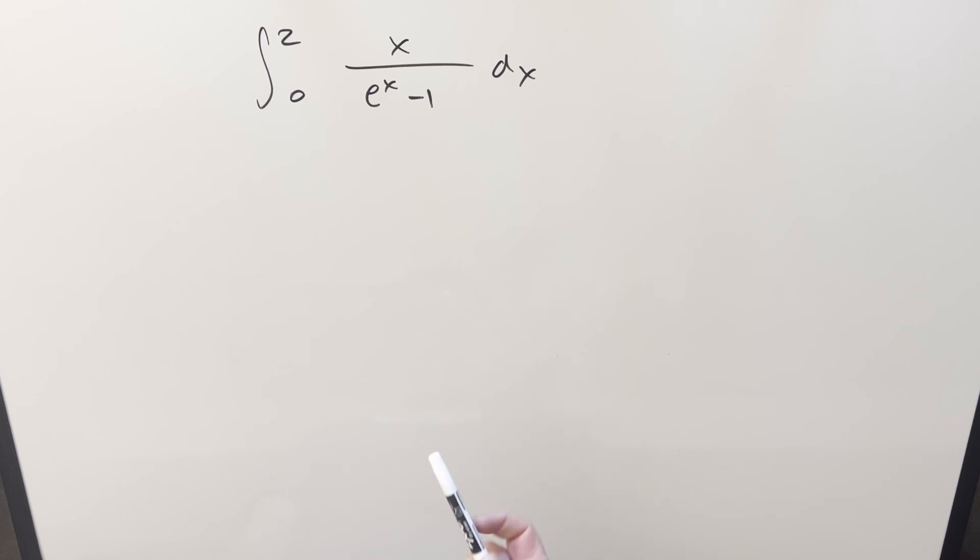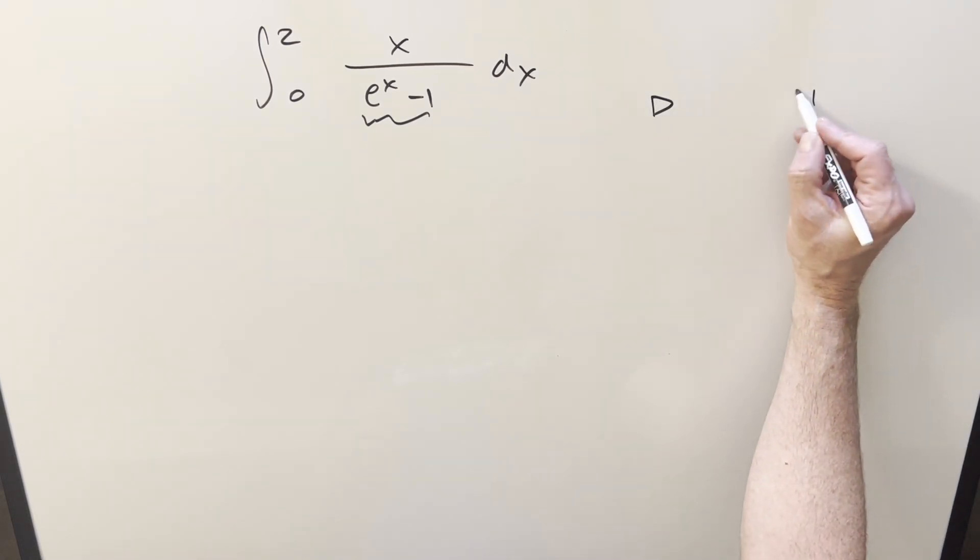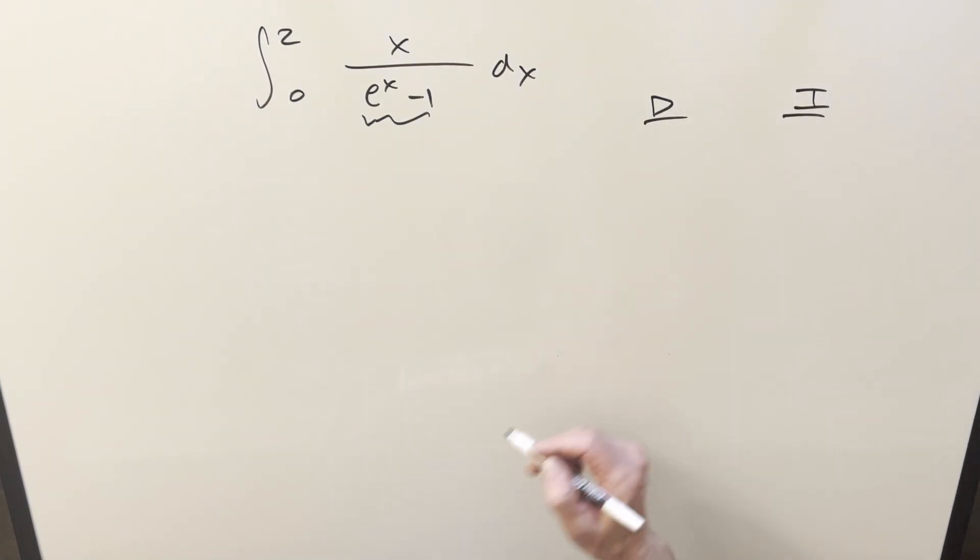In the first video on this, I used geometric series, just noticing that if we rearrange the denominator, we can have this in the form of 1 minus e to the minus x. What I want to do in this video is a little more straightforward and possibly quicker. I just want to use integration by parts using the DI method on it.